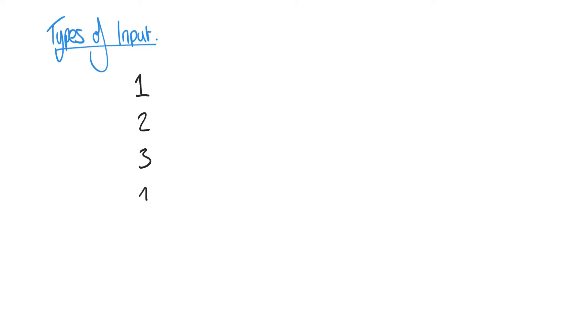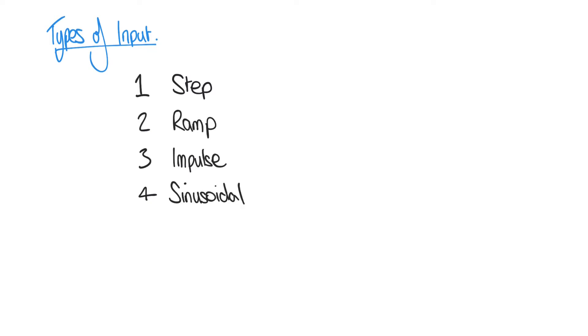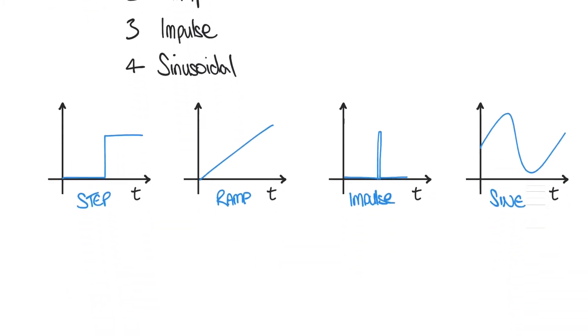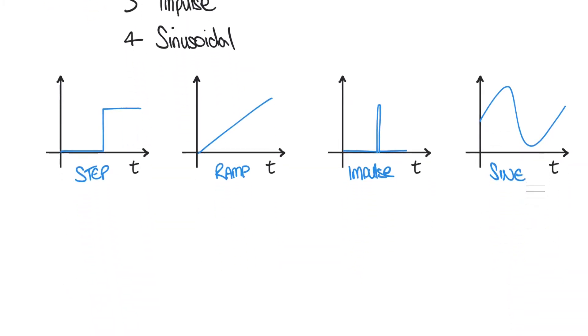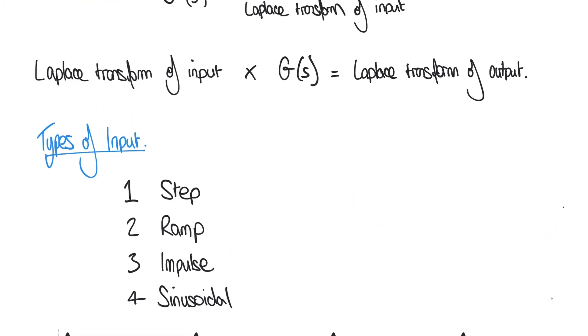There are many types of input to a system, both electrical and mechanical, but we can broadly classify inputs depending on their form. We're going to focus on four in this video: the step input, the ramp input, the impulse input, and the sinusoidal input. Here's a visual representation of each of these. What we're going to do in this video is express each of these input types in the s domain, so that we can use them to determine the output in the s domain as well.